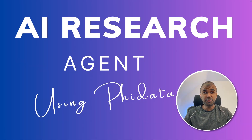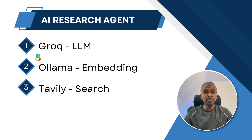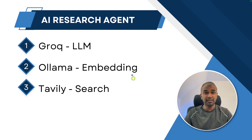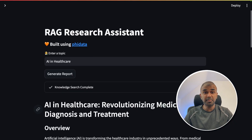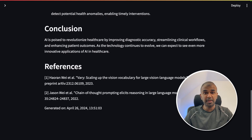I'm really excited to show you this AI research agent, which is created using Phi Data. In this user interface we have the ability to read PDFs, read data from URLs, and search the web. It is going to be super fast because of Grok, which is serving the large language model Llama 3. We are also using Ollama for embedding, Nomic embedding, and finally Tavily for searching the internet.